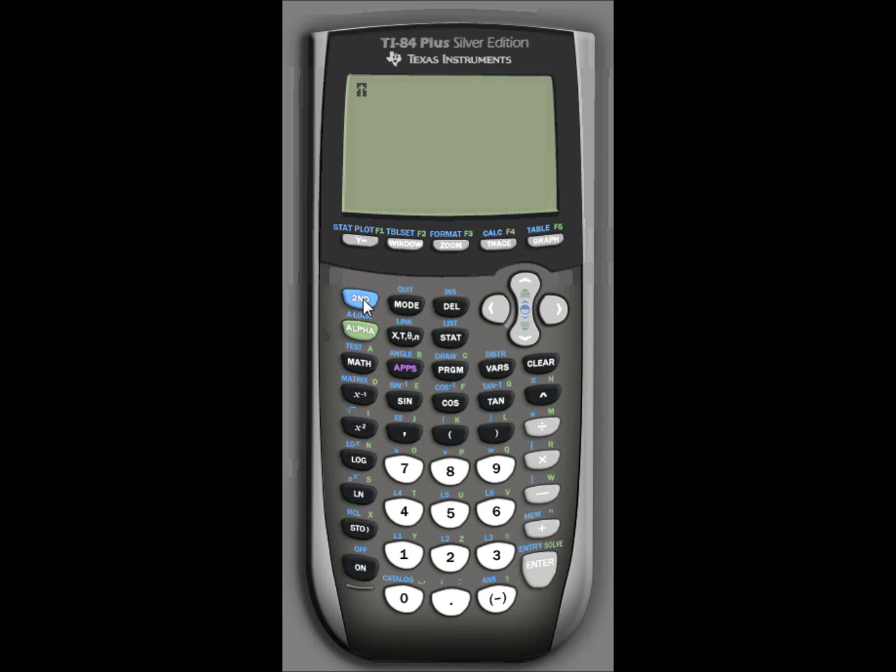We do second and then the catalog key. Notice the catalog key is zero, so we do second zero. Then we arrow down the list until we get to diagnostics on. And so we go right down. Here we go, diagnostic on. We hit enter to select it, and then we hit enter again.